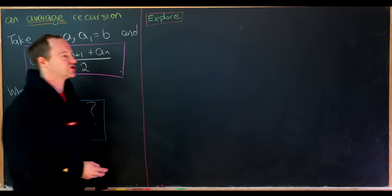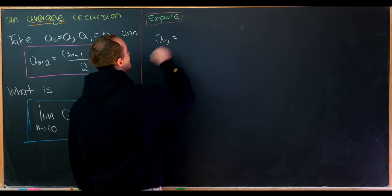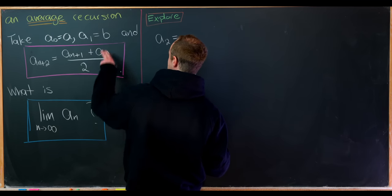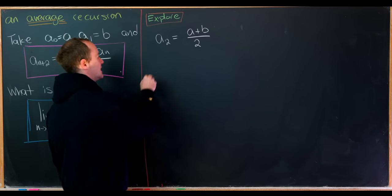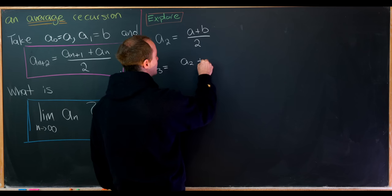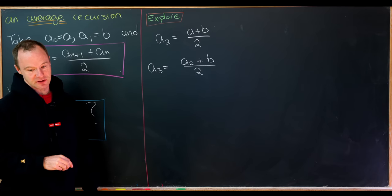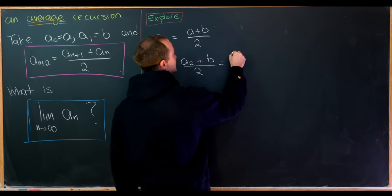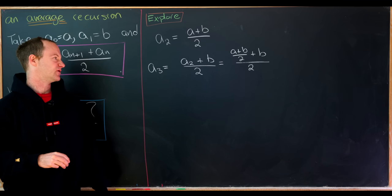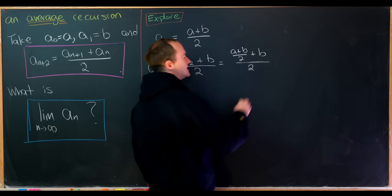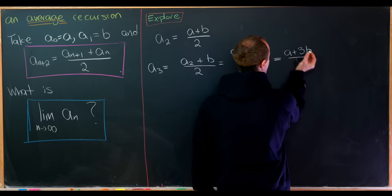Let's explore the first couple of values to see what's going on. a2 is the average of the previous two terms, so that's (a + b) / 2. Then a3 is (a2 + a1) / 2 = ((a+b)/2 + b) / 2, which we can simplify.